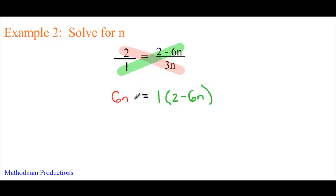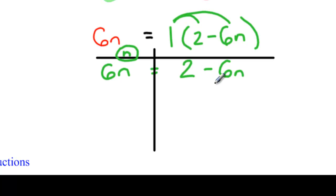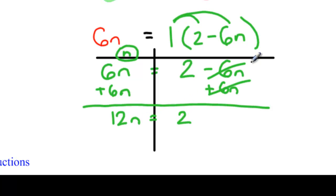On the left side, we can't really simplify it. But on the right, we can use the distributive property. It's 1 times 2, that's just 2. 1 times negative 6n, that's negative 6n, equals 6n. You want to move this 6n by adding a 6n to both sides. 6n plus 6n, that's just 12n, equals 2 drops down. The negative 6n and the positive 6n cancels out.